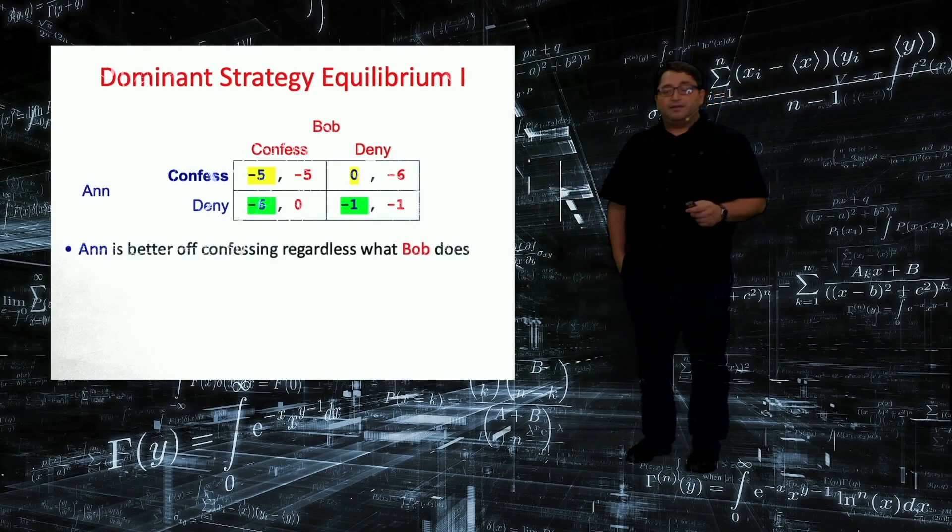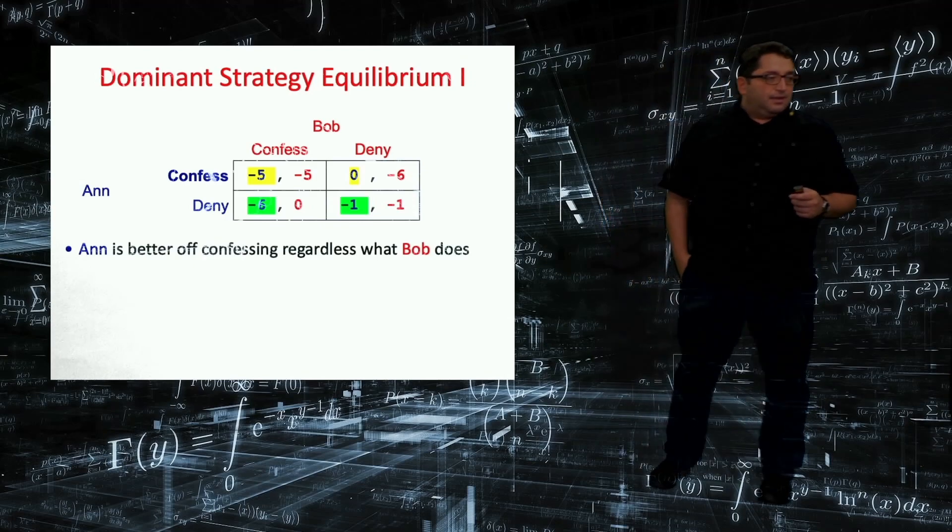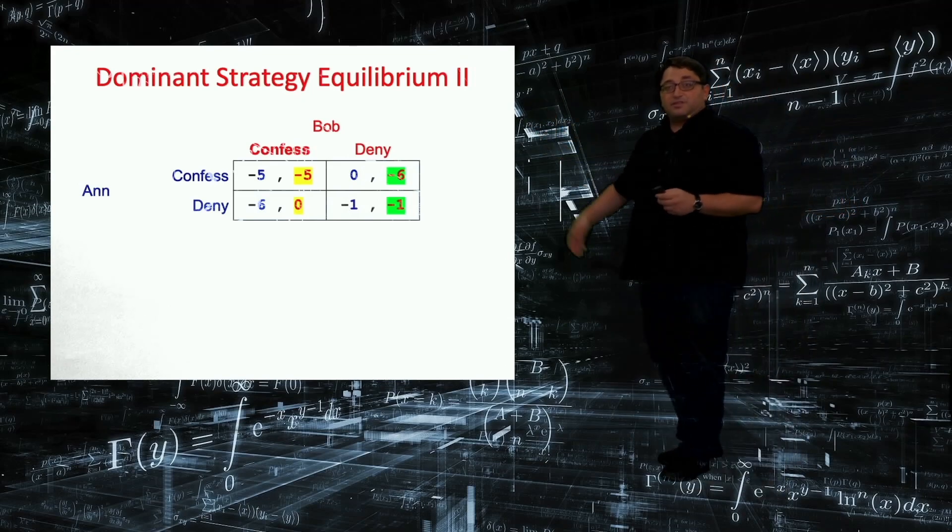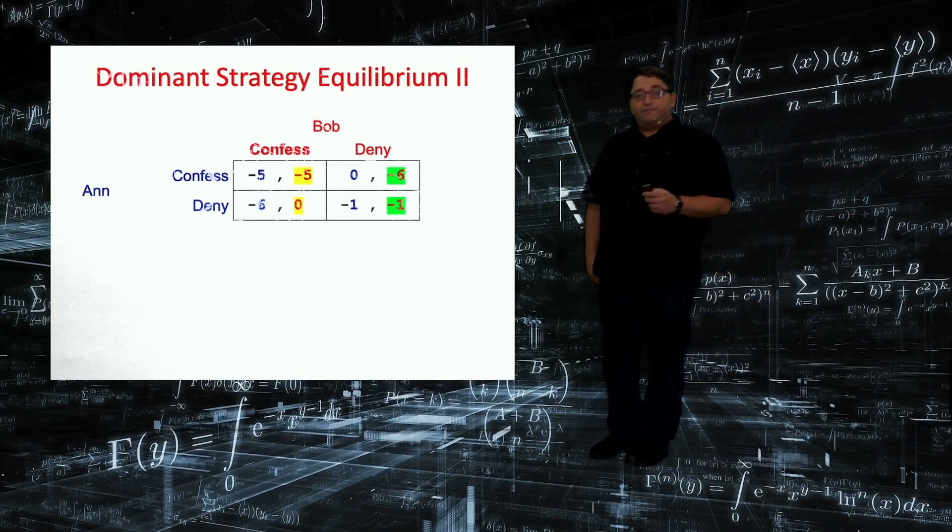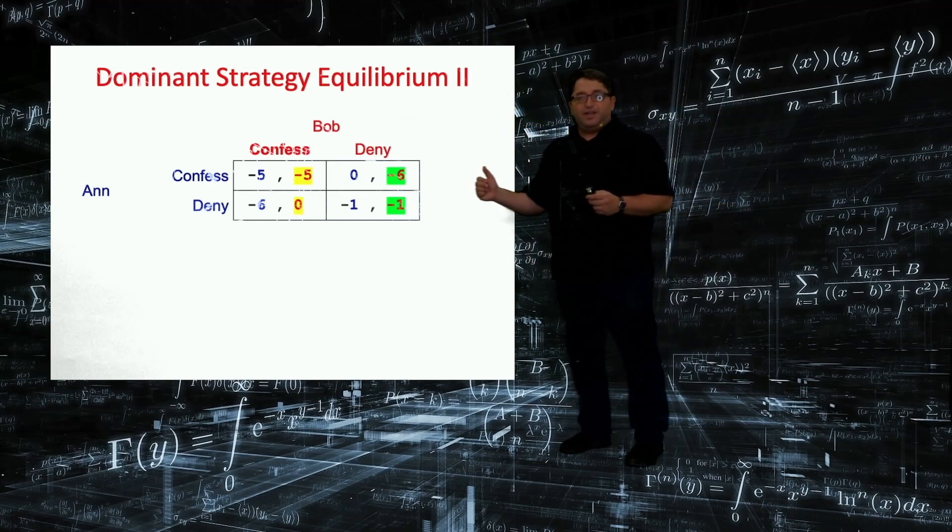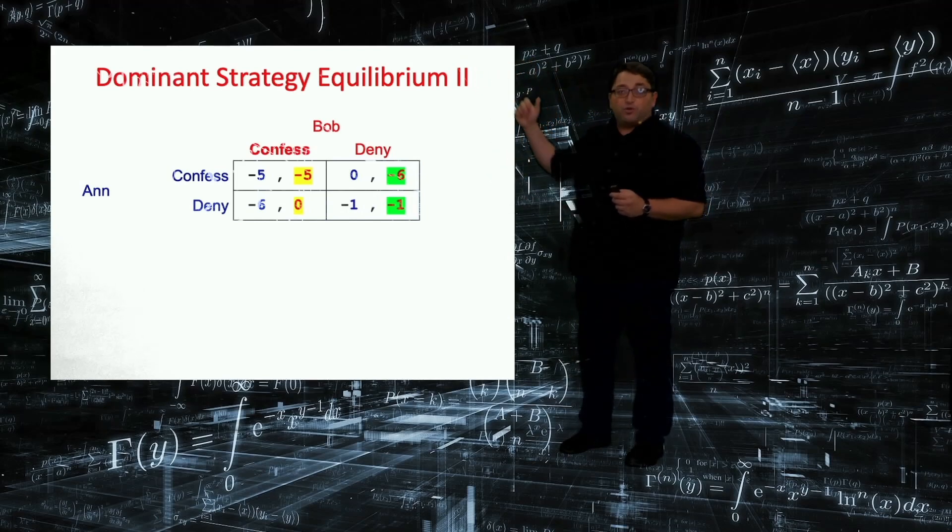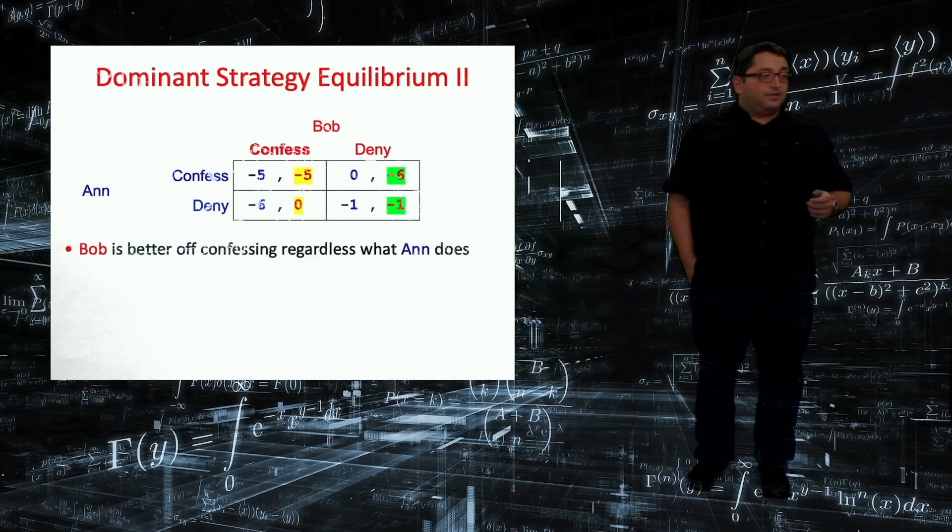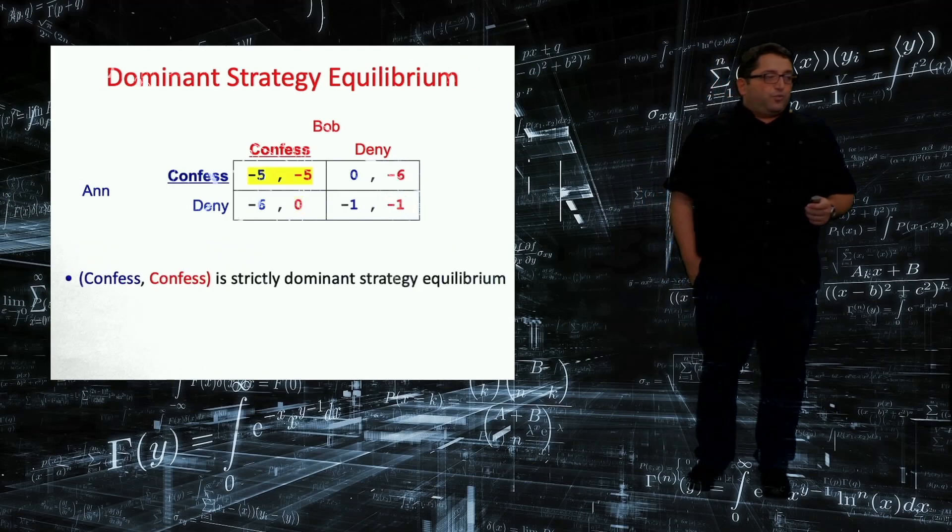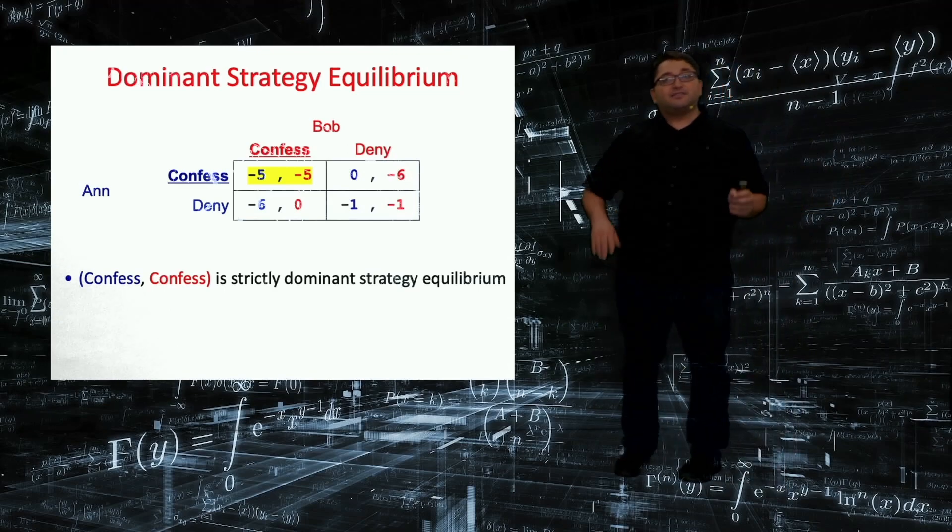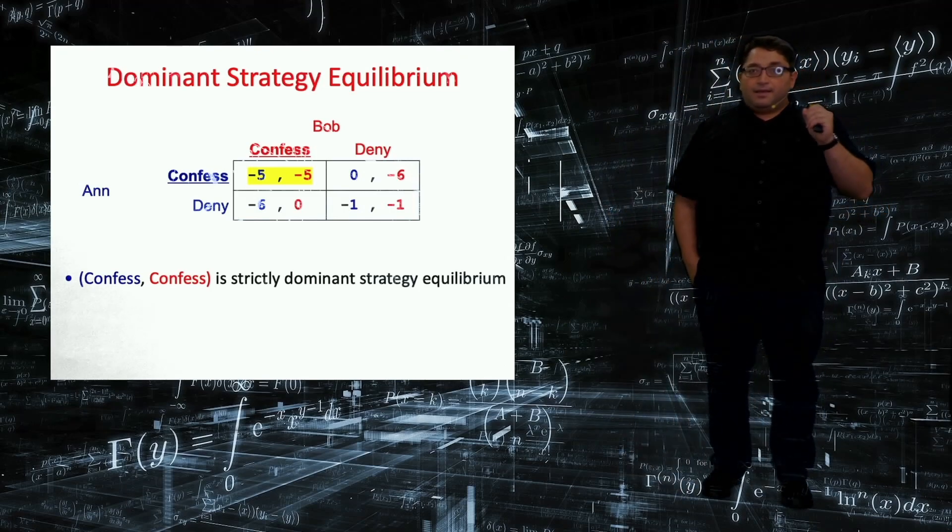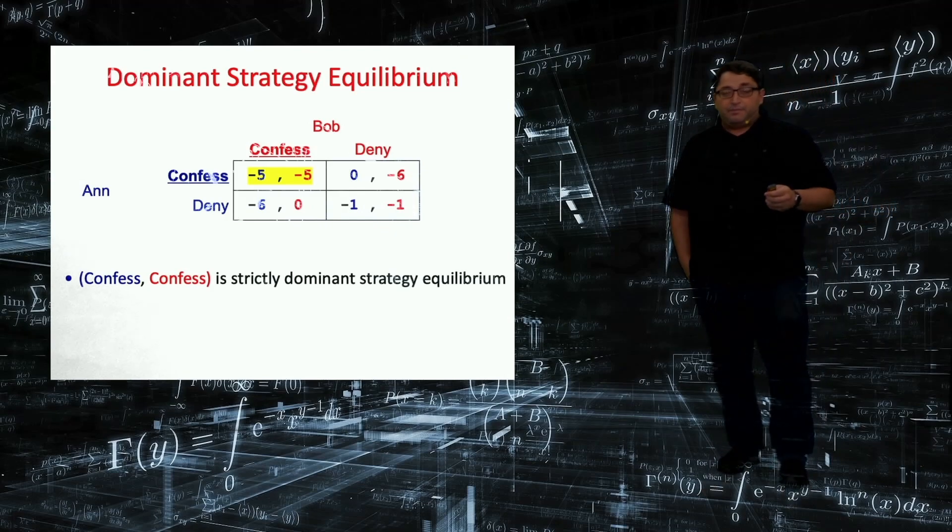So let's look at Bob. So first of all, confess, for Ann confess is strictly dominant strategy. And for Bob, I mean, the numbers are symmetric. You see, by confessing, he's going to get either minus 5 or 0. By not confessing minus 1 or minus 6. Regardless of what Ann does, Bob is always better off by choosing confess. So for him, confess is a dominant strategy as well. So this combination where both Ann and Bob confess, that's our equilibrium. So equilibrium of prisoner's dilemma game, the dominant strategy equilibrium is both of them confesses.